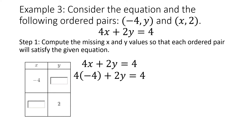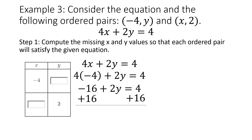4 times negative 4 is negative 16, so I have negative 16 plus 2y equals 4. I need to move the negative 16, so I'm going to add 16 on both sides, and I'm left with 2y equals 20, because 4 plus 16 is 20. My last step: since 2 and y are being multiplied, I'm going to divide by 2 on both sides. 20 divided by 2 is 10. So the missing coordinate for negative 4 comma y would be y equals 10, and I'm going to put that in my table.